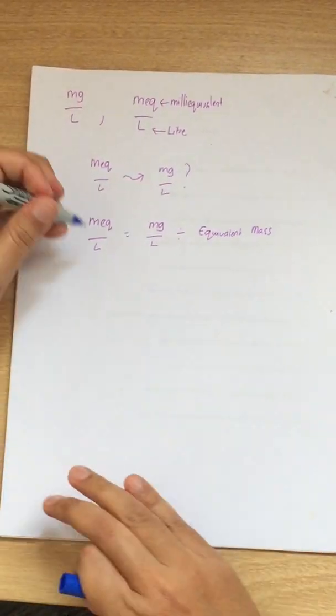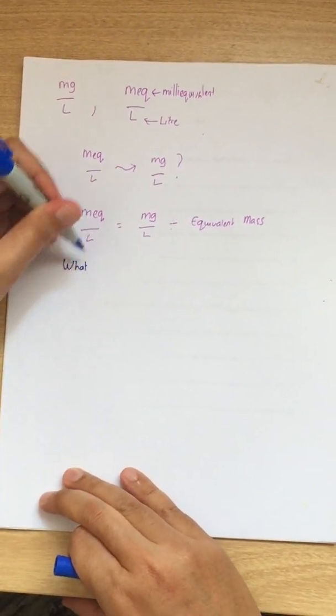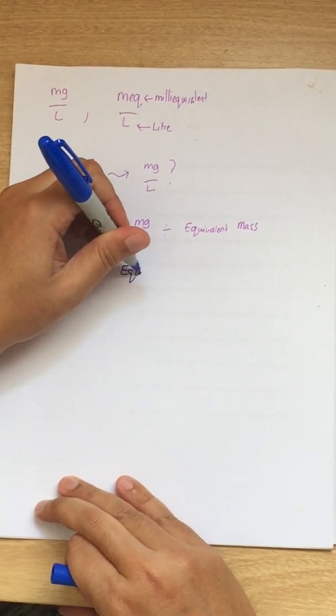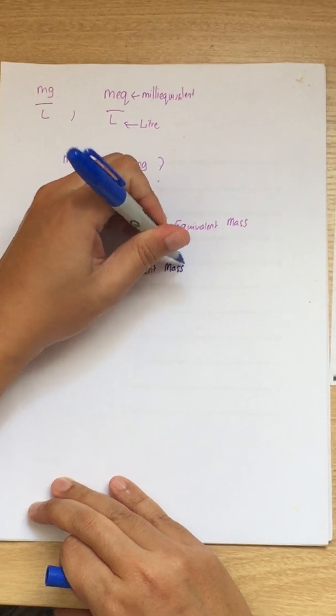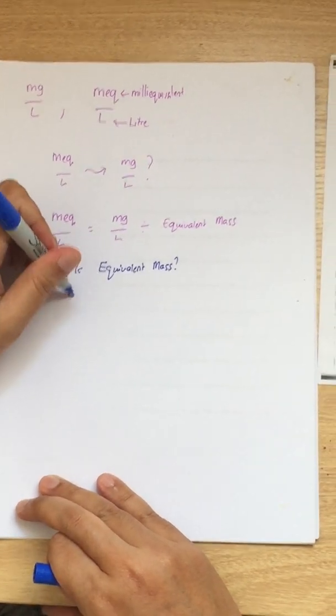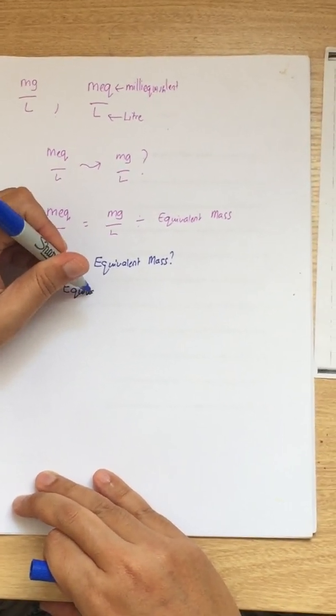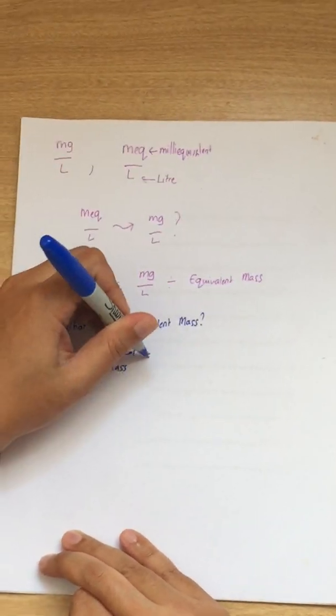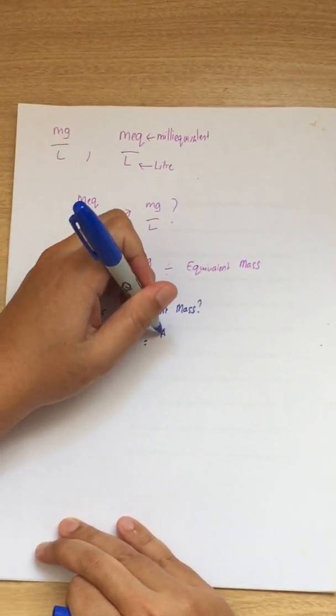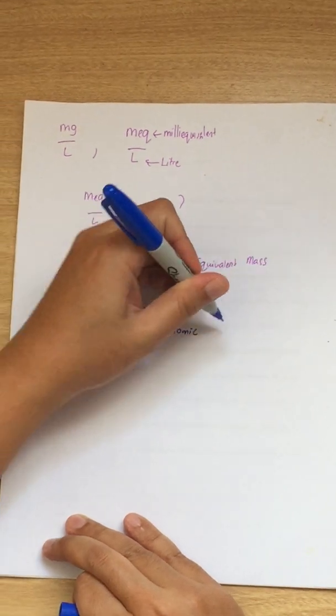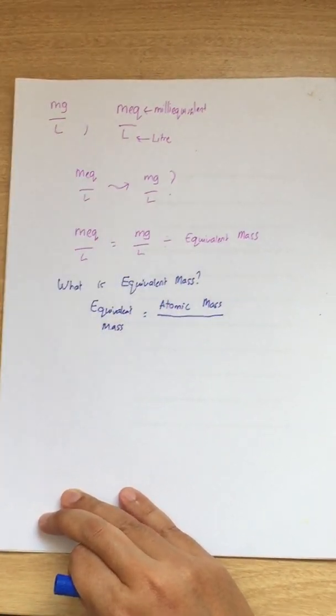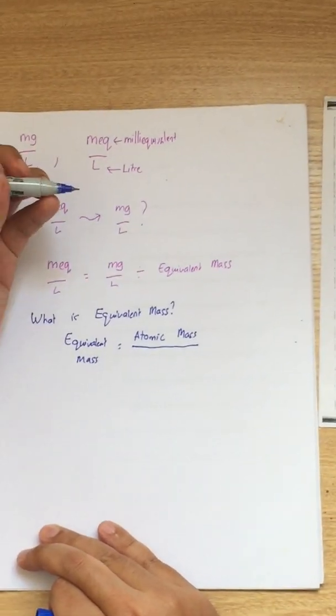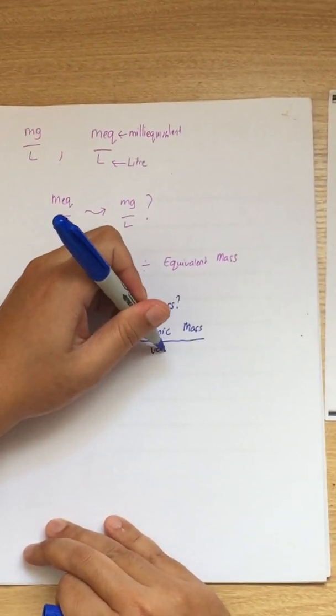So the question now is what is equivalent mass? Equivalent mass is equal to atomic mass. If you remember, I mentioned atomic mass in the periodic table divided by the valency.